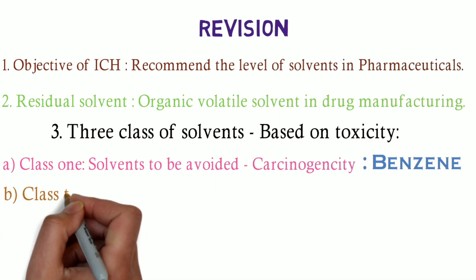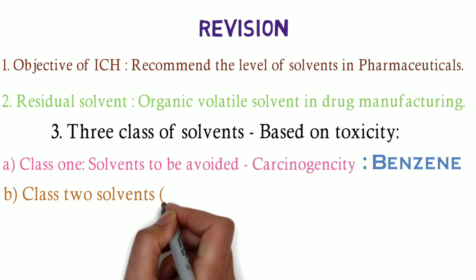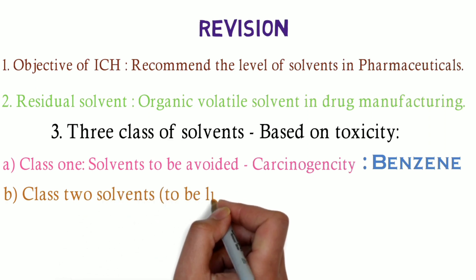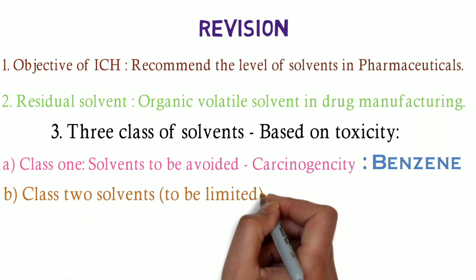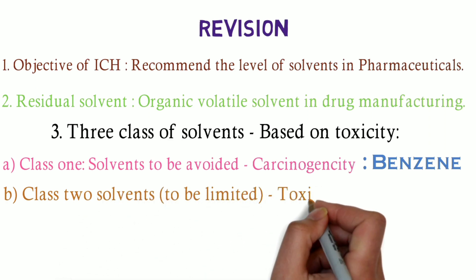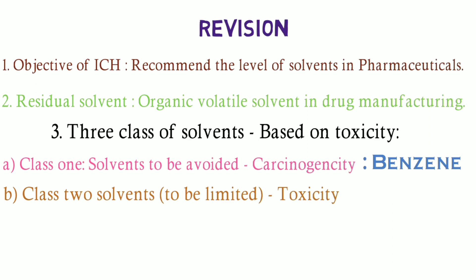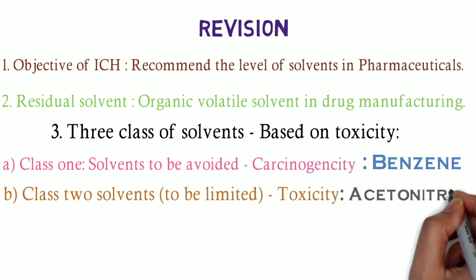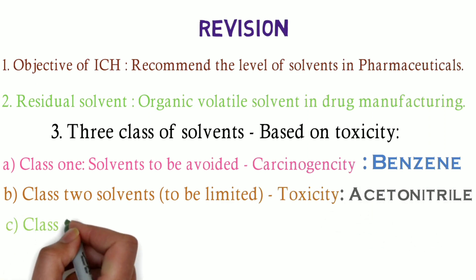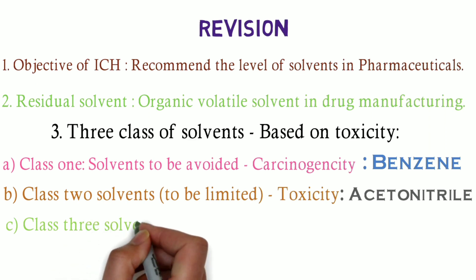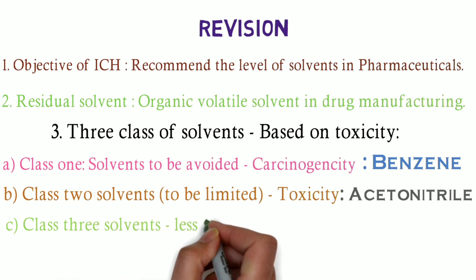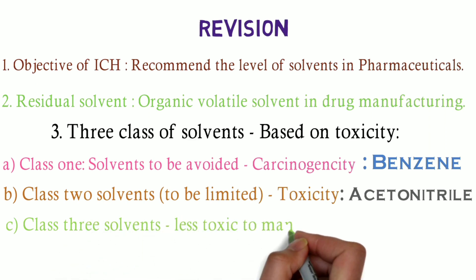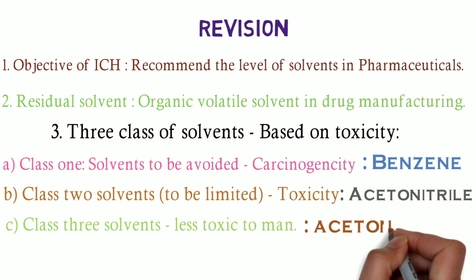Class 2 solvents are solvents to be limited due to their reversible or irreversible toxicity — example: acetonitrile. Class 3 solvents are less toxic to man — example: acetone.